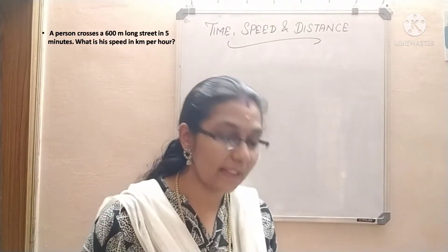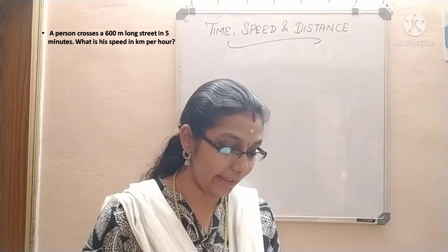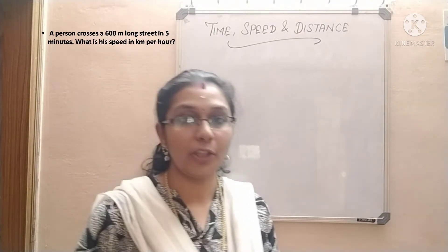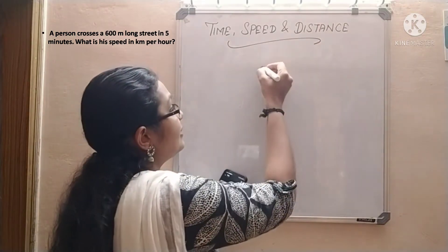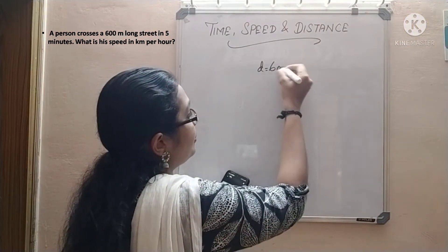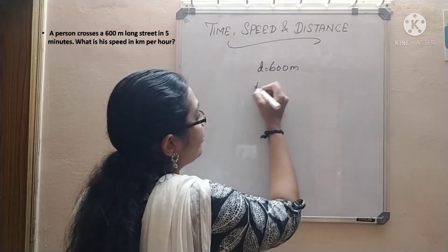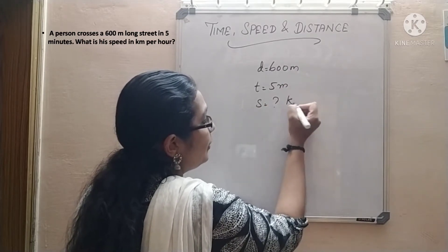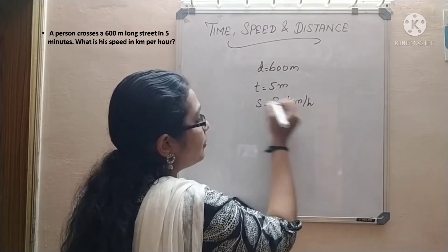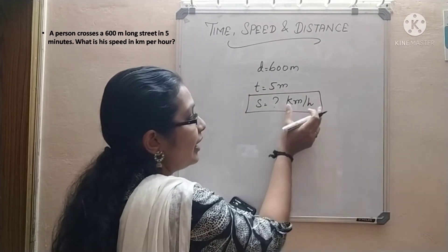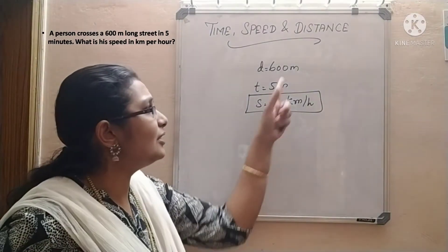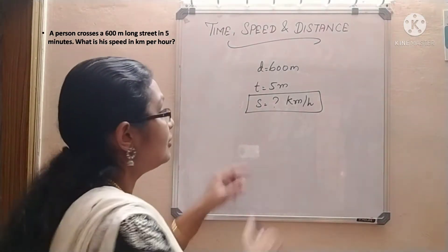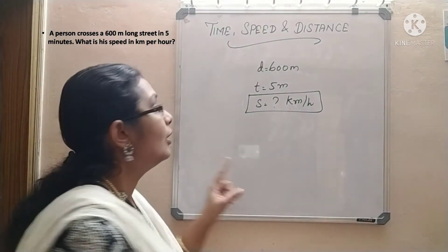A person crosses a 600 meter long street in 5 minutes. What is his speed in kilometer per hour? The information given: distance is 600 meters, time is 5 minutes, and they are asking for speed in kilometer per hour. You must note the unit carefully, or else if you directly substitute you will get the wrong answer. So listen to the unit carefully.